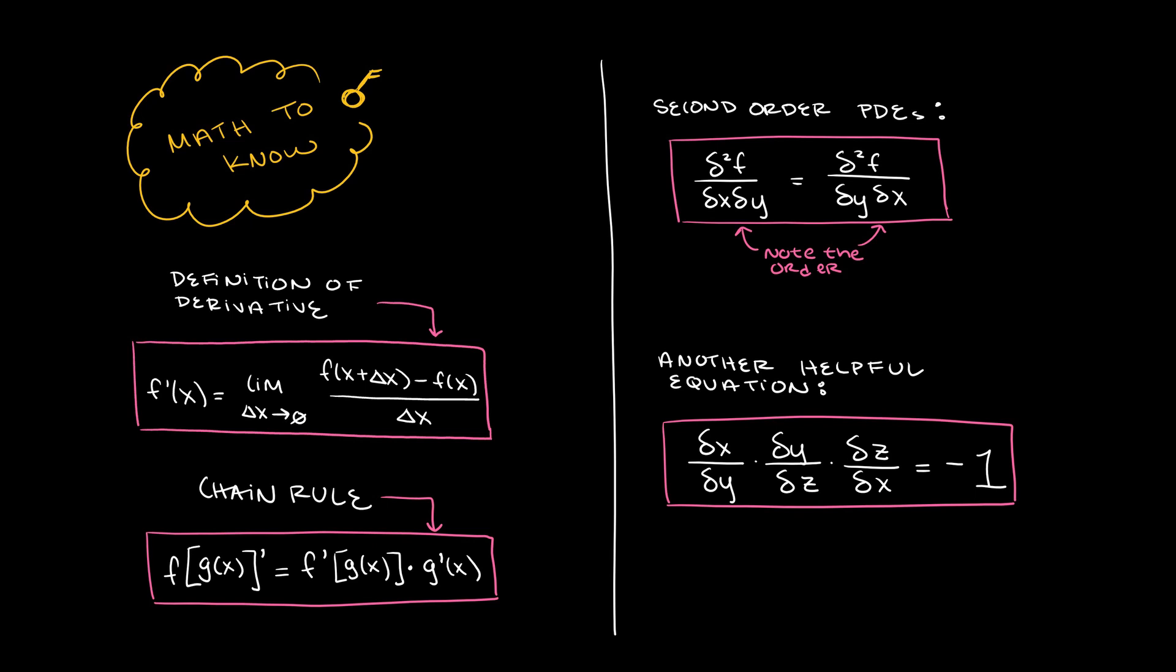So here's the definition of the derivative. And here's an example of the chain rule. A PDE relates partial derivatives of a multivariable function f. If we are taking a partial derivative with respect to x, then y and z are constant.